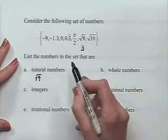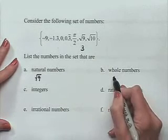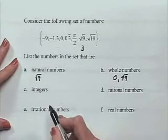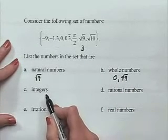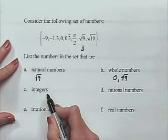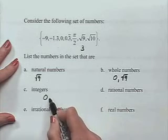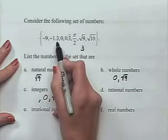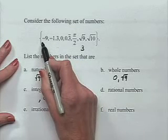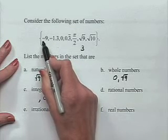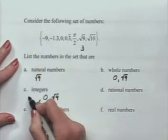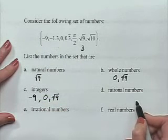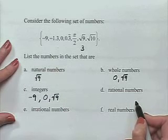Whole numbers include all natural numbers and 0. Since 0 is in our set, we list 0 and square root of 9 as our whole numbers. Integers are the whole numbers together with any negative whole numbers. We keep 0 and square root of 9, and we also check our negative numbers. Negative 9 is a negative whole number, so it is one of our integers.